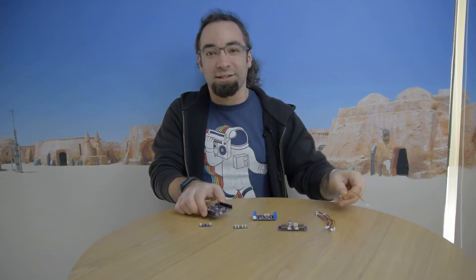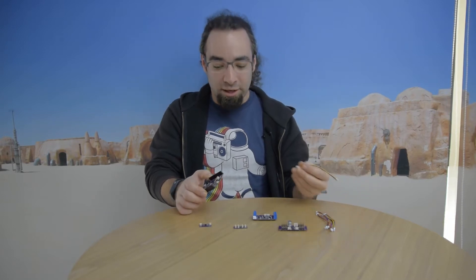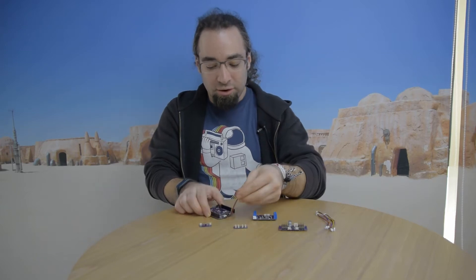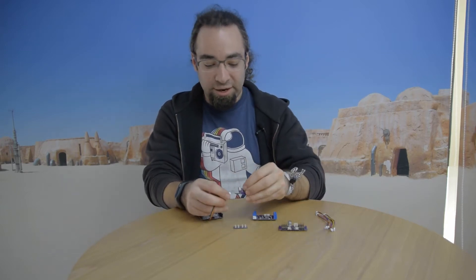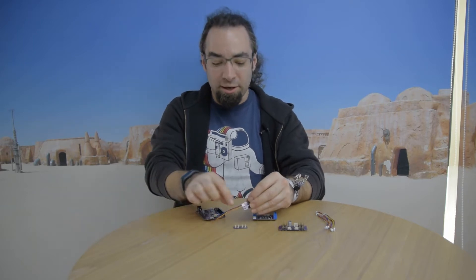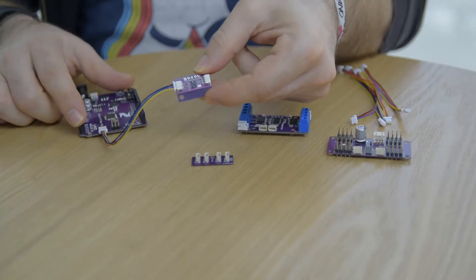So I want to show you how easy it is to connect different modules together using Qwik. If I want to connect our Zuino Uno up to our TOF module, just plug that right in here and right in there. We're all hooked up and ready to go.